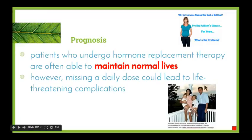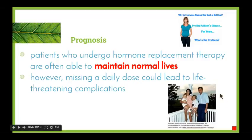An example is JFK, President of the United States, who suffered from Addison's disease. It didn't have a major impact on his life — he was able to become President, though it would have meant taking daily doses of hormone replacement therapy. That's the end of this video. Thank you.